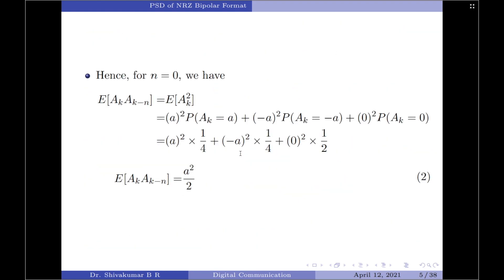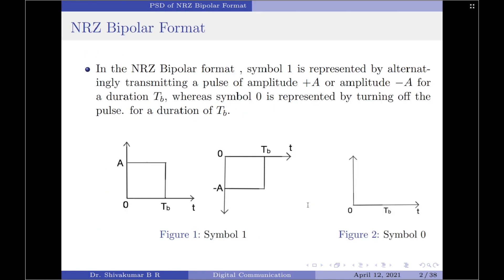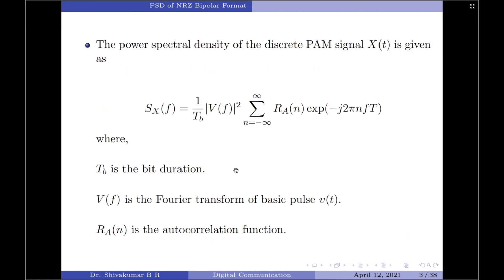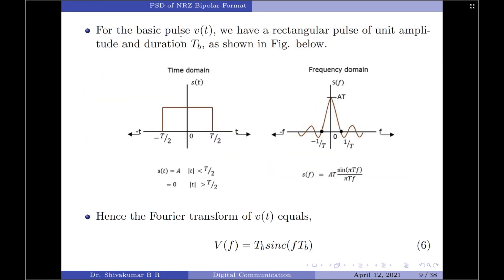With that, we have completed the computation of the autocorrelation part. Let us now move on to find V(f). We know that V(f) is the Fourier transform of the basic pulse, and we have already stated that the shape of the basic pulse is rectangular in nature.